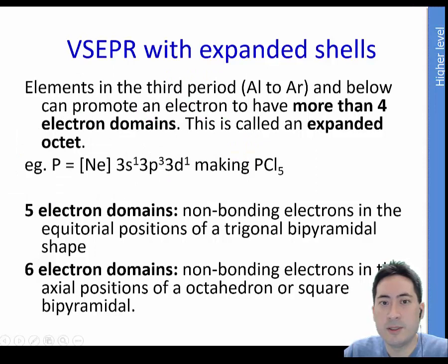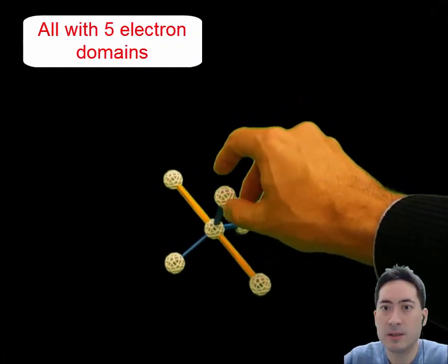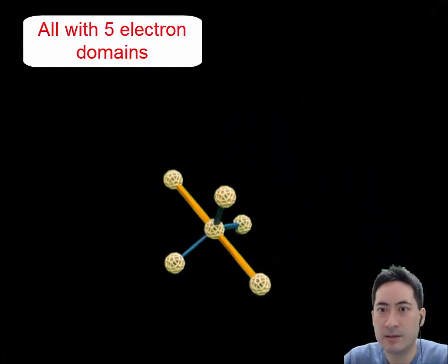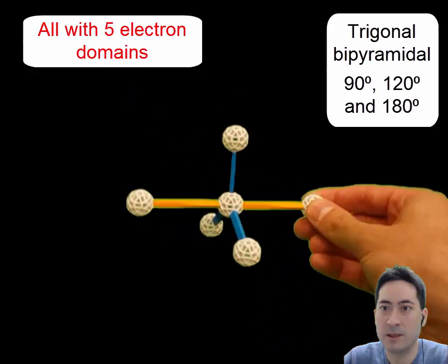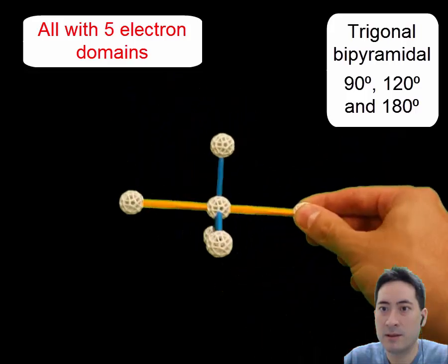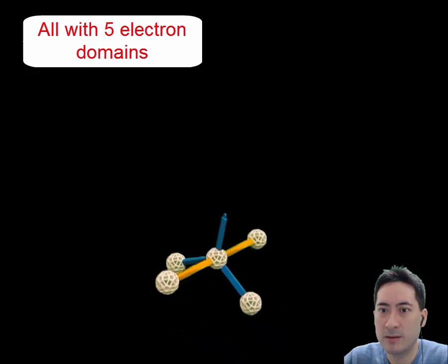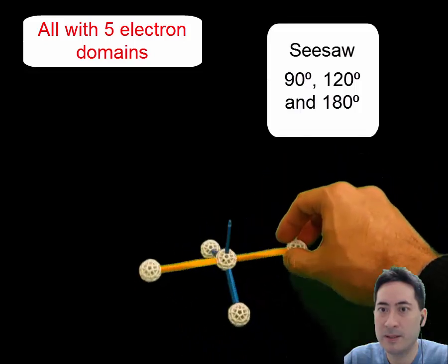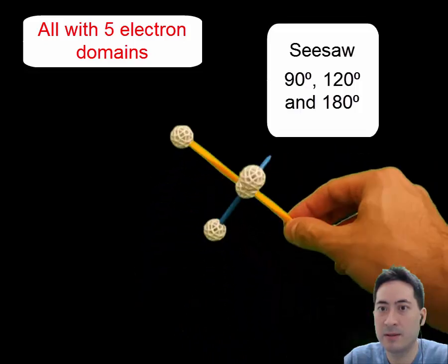Moving on to shapes now, we have the expanded shells. Now we had exceptions with shells that didn't make the octet with beryllium and boron in standard level. Now for higher level, you have to look at larger molecules that will have five or six domains. So let's first have a look at the shapes. So these ones are all five electron domains. This happens because the molecules are getting larger now, so they can fit more. You remove that out and now you have a seesaw shape. Make note of the angles.